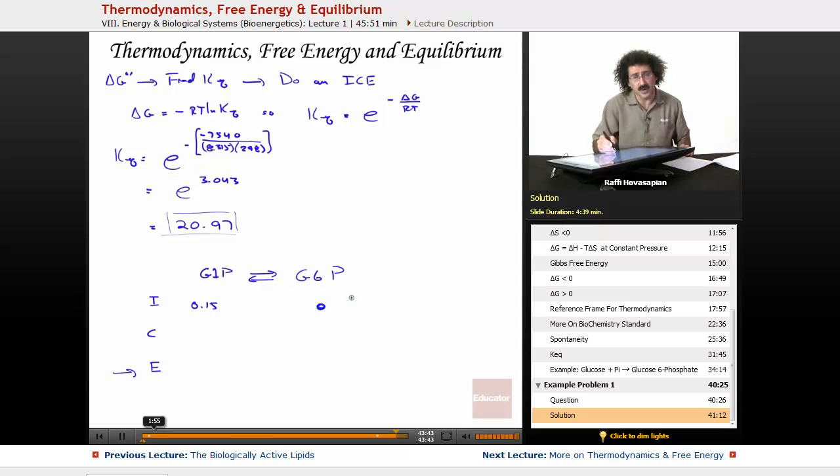We know the reaction is going to move forward. There's none of this, so it's going to move forward. That means glucose 1-phosphate is going to deplete by a certain amount, X. The amount of depletion, this is a 1-to-1 ratio, is going to be exactly the amount of glucose 6-phosphate that shows up. So this is going to be positive X. That's the change that takes place.